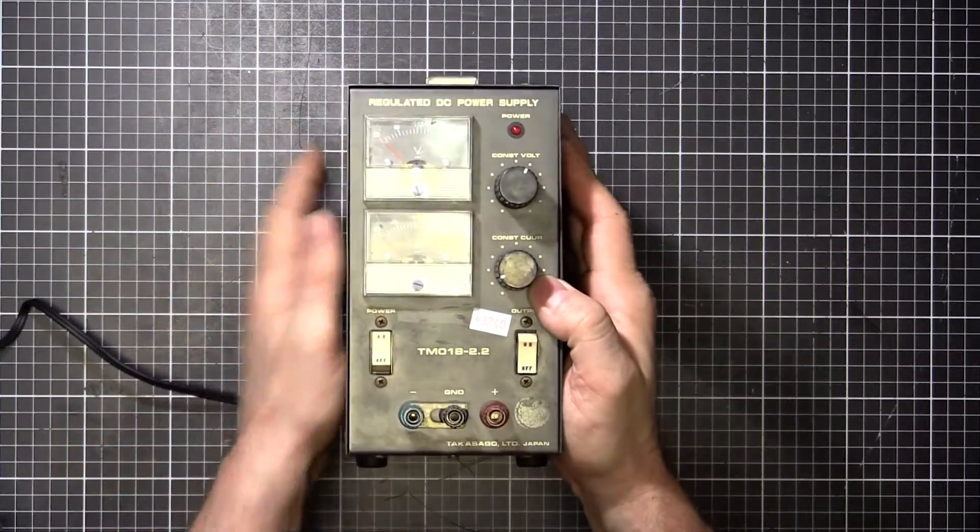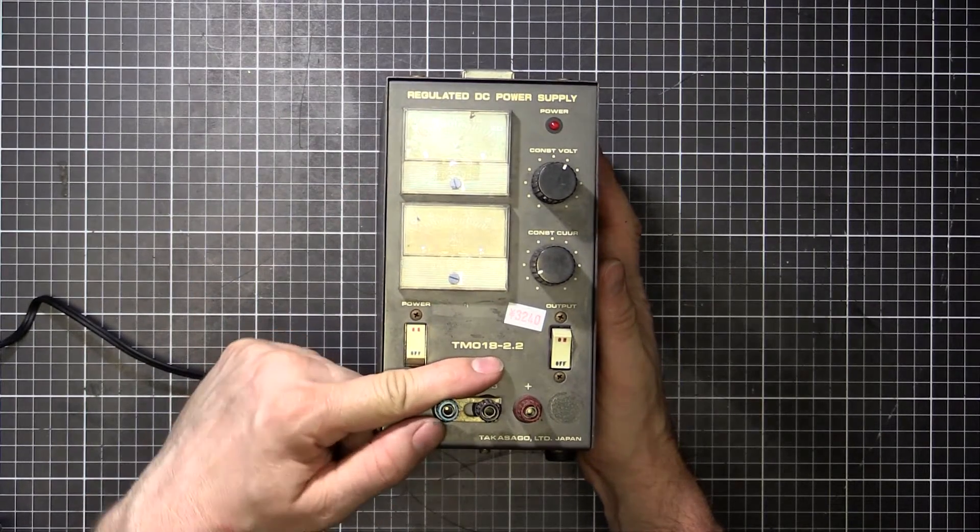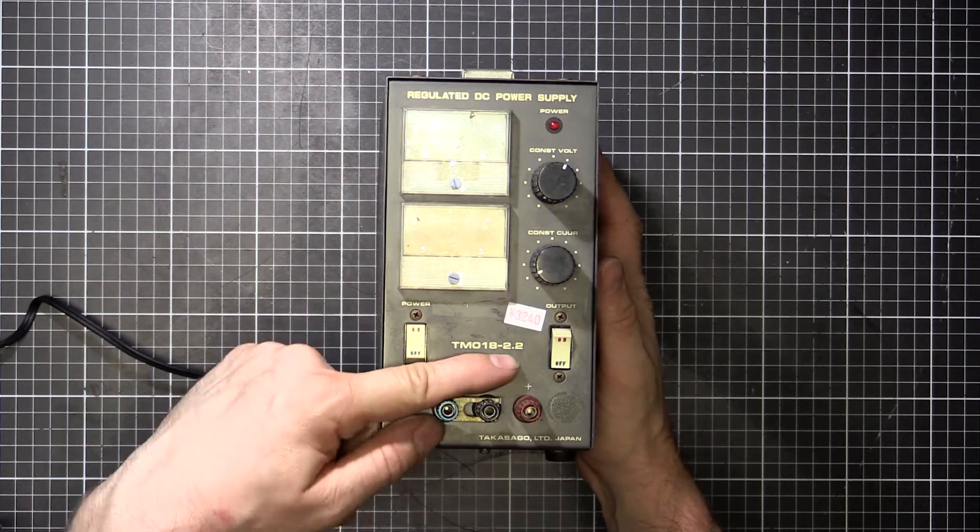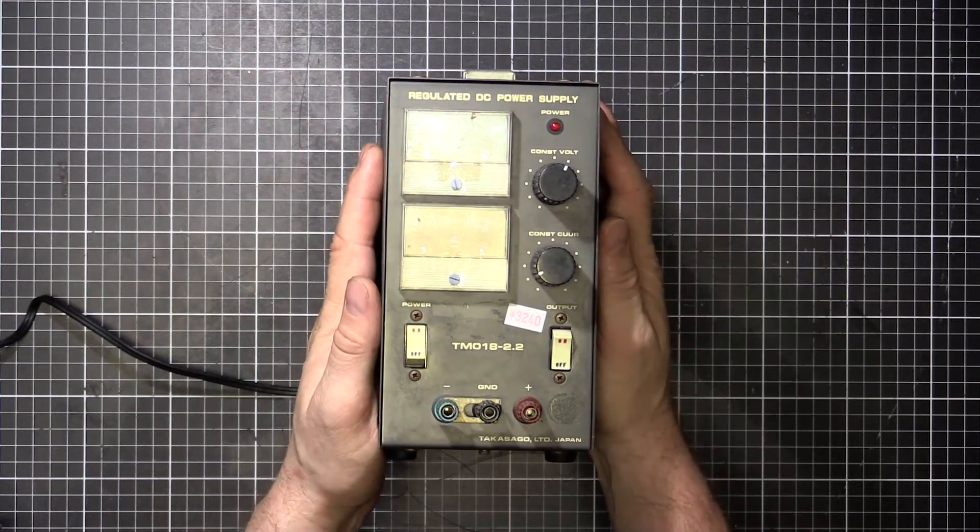They're an old regulated DC power supply, TMO 18-2.2. That means 18 volt, 2.2 amp.